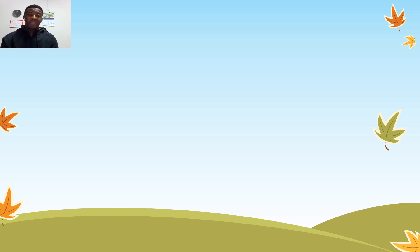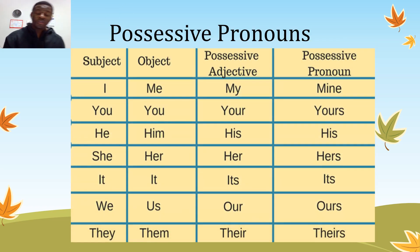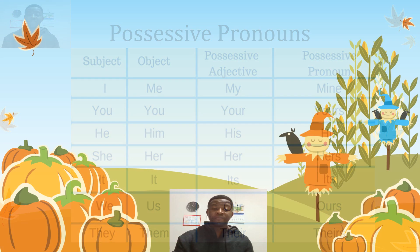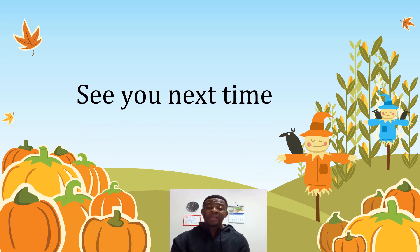Now let's go on to the charts. You can see the combination of subject pronoun, object pronoun, possessive adjective, and possessive pronouns. These are what we have to learn today. See you again next time!